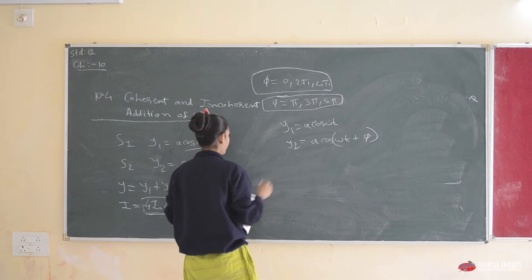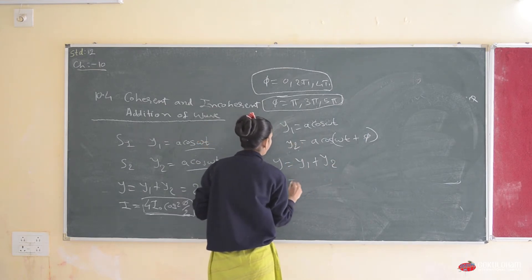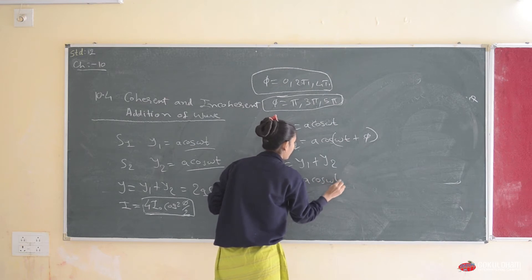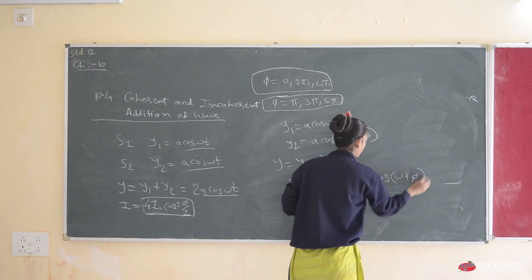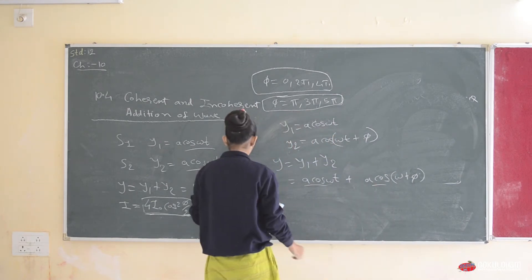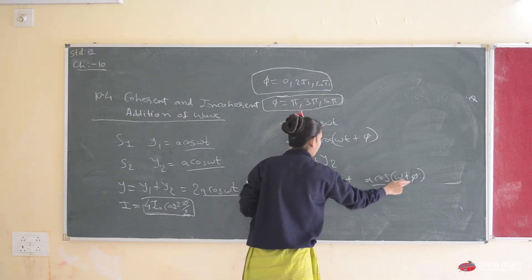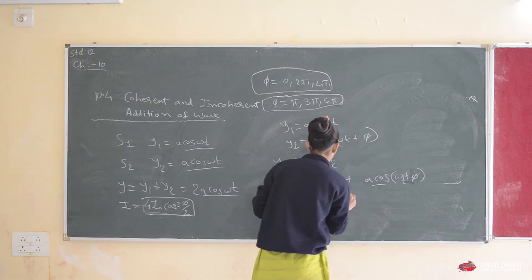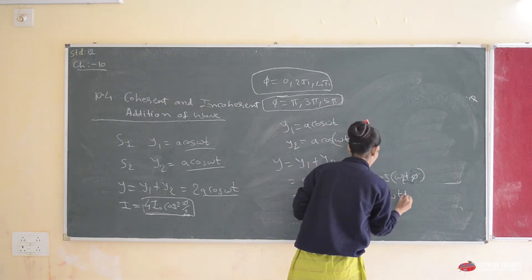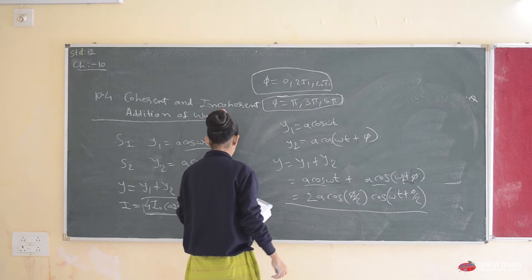The resultant displacement y = y1 + y2, which gives us A cos(ωt) + A cos(ωt + φ). Taking A common, we get 2A cos(φ/2) · cos(ωt + φ/2). This is our total resultant displacement y.